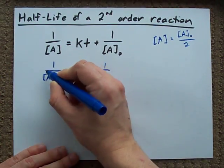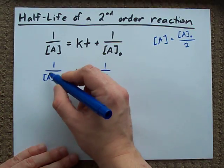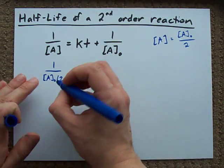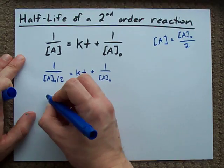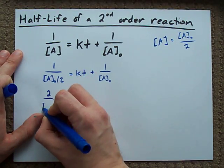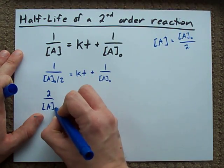This, 1 over a fraction. When you divide by a fraction, it's like multiplying by its reciprocal. So, this simplifies to 2 over the initial concentration.